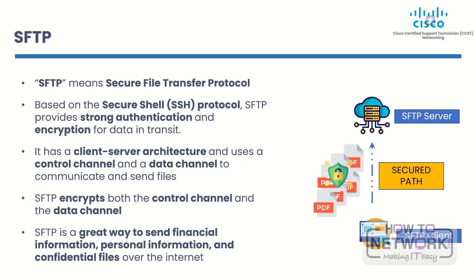The Secure File Transfer Protocol, or SFTP, is a network protocol that lets you access, move, and manage files over a secure data stream. Based on SSH, or Secure Shell, SFTP provides strong authentication and encryption for data in transit. SFTP works similarly to FTP — it has a client-server architecture and uses a control channel and a data channel to communicate and send files. But unlike FTP, which sends data in plain text and has no security features, SFTP encrypts both the control channel and the data channel.